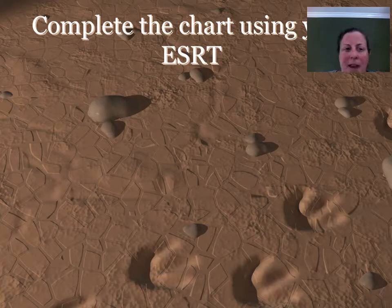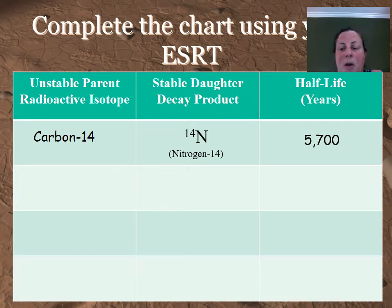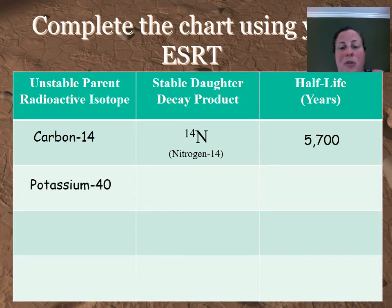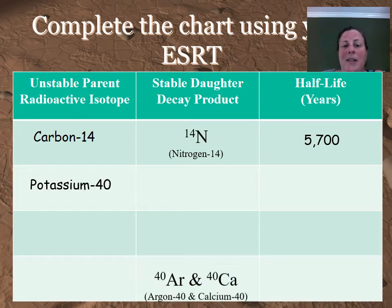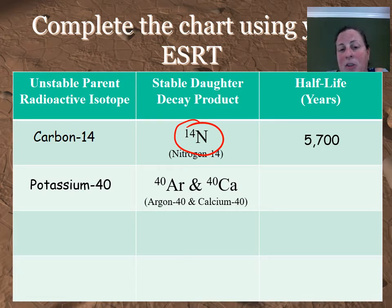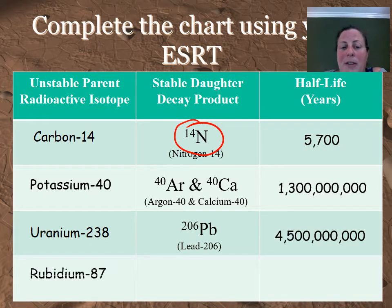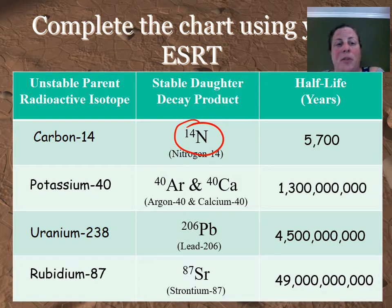Using your reference table, we can complete this graphic organizer. We're going to list each of the unstable parents that are in your reference table and then the stable daughter decay product that they change into, along with the amount of time in years. So we're going to break down each of those scientific notations into the actual amount of years. Carbon-14 changes into nitrogen-14 in 5,700 years. Potassium-40 has two possible products — argon-40 or calcium-40. You can find those chemical symbols on the bottom of page 1 of your reference table. Take a moment, pause on this page, copy it down, look at the reference table, and we'll do more practice in class.